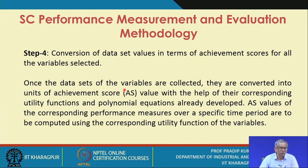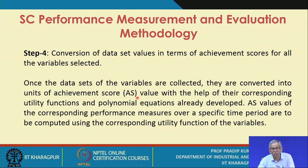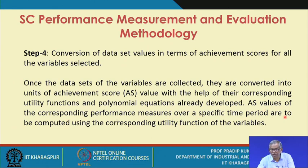Step 4 is the conversion of data set values in terms of achievement scores for all variables selected. Once the data sets are collected, they are converted into units of achievement score with the help of their corresponding utility functions and polynomial equations already developed. Values of the corresponding performance measures over a specific time period are computed using the corresponding utility functions.